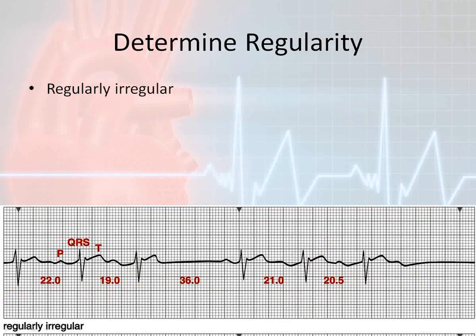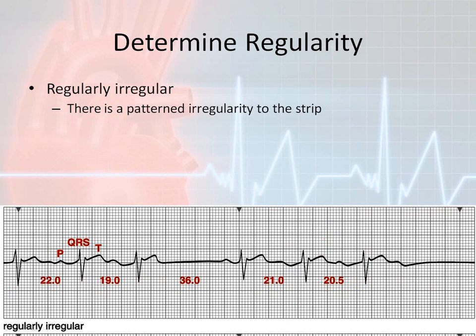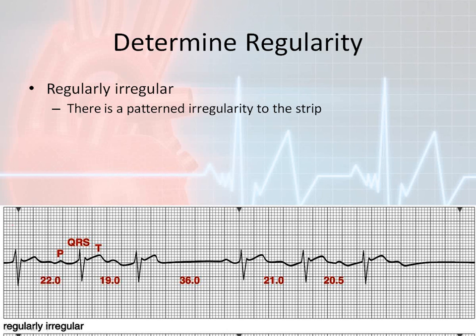Now let's discuss something that is regularly irregular. A regularly irregular strip means that there is a patterned irregularity to the strip. This does not mean that there is an underlying rhythm that is regular — the entire strip is irregular, but you can definitely see a pattern.